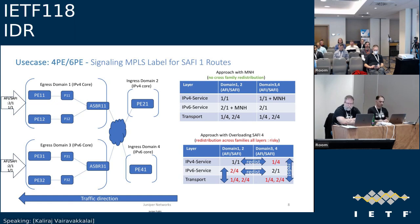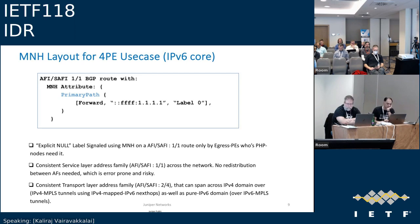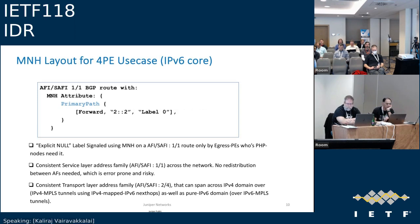This shows the layout of the MNH attribute for the 4PE case. When it is an IPv4 core, we will have a next hop that is an IPv4-mapped IPv6 address, and the label will be the explicit null. For a pure IPv6 core, we just have a unicast IPv6 address and label value 0. That's what the MNH attribute looks like in these scenarios.